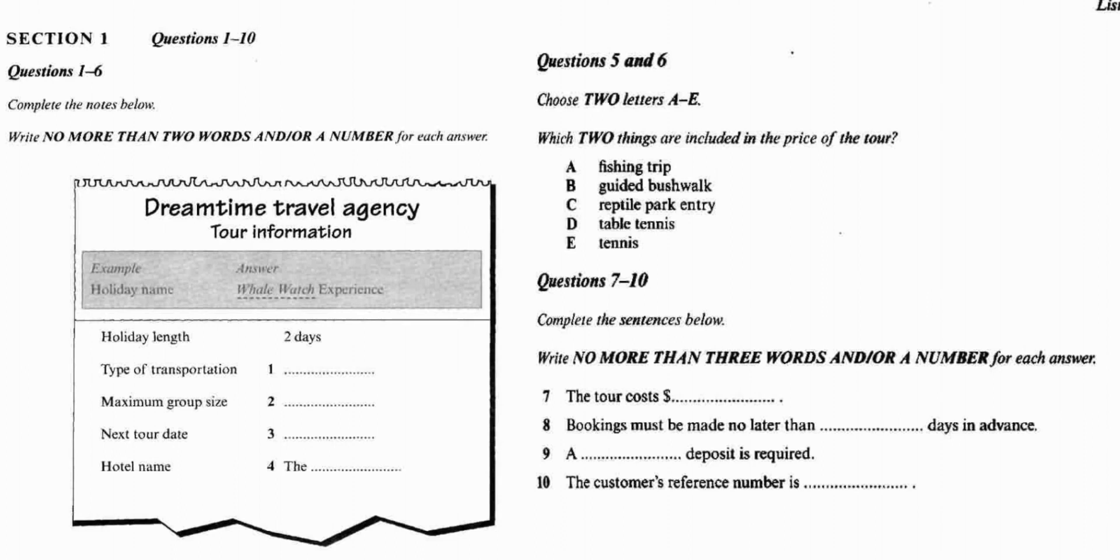Good afternoon, Dreamtime Travel. How can I help you? Oh, hello. I'm interested in the holidays you offer along the coast near here. Yes, we operate several tours up the coast. Where in particular did you want to go? Well, I like the sound of the holiday that mentioned whales. Was it whale watching? Oh, that's our whale watch experience. It's very popular and it's based in a lovely little town with nice beaches. Oh, right. And how long does it last? It's two days. That includes four hours travel time each way from here. Good. I don't want to be away any longer than that. So is that by coach? Actually, it's by minibus. We like to keep those tours small and personal so we don't take a whole coach load of people. In fact, we only take up to 15 people on this tour, although we do run it with just 12 or 13.